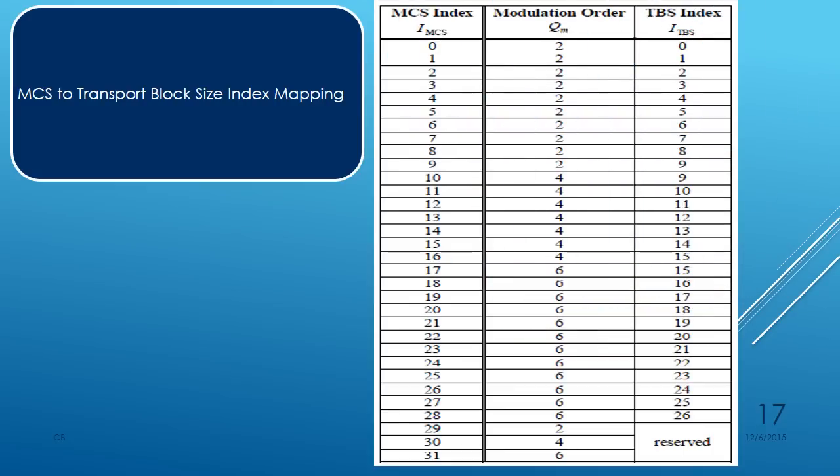MCS to iTBS mapping: iTBS is the Transport Block Size Index. The values are mapped here and we will be using these values while calculating the throughput.